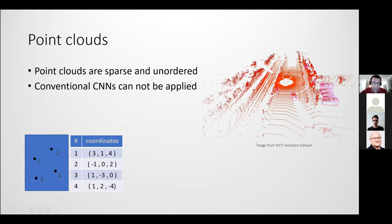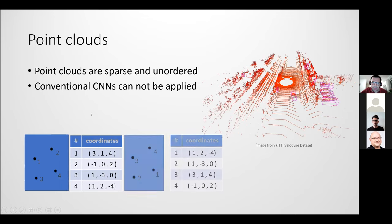For example, if you have four points in a point set you can reorder them in any way and still have the same point cloud. This means points are permutation invariant, which makes convolutional neural networks — which apply to ordered data — difficult to use. In point clouds the data is stored as a set and is order invariant, so we need methods that are order invariant.